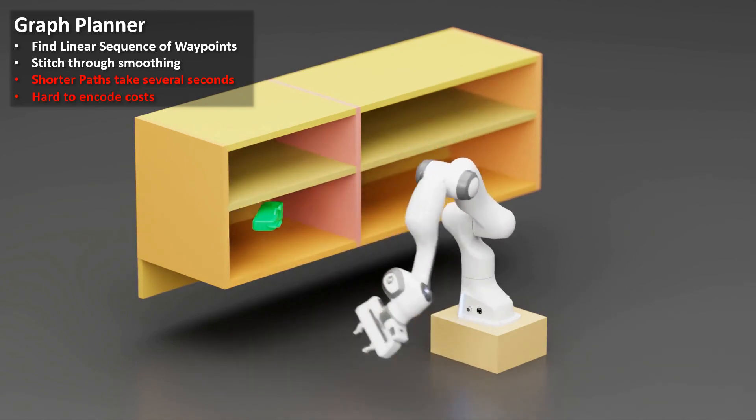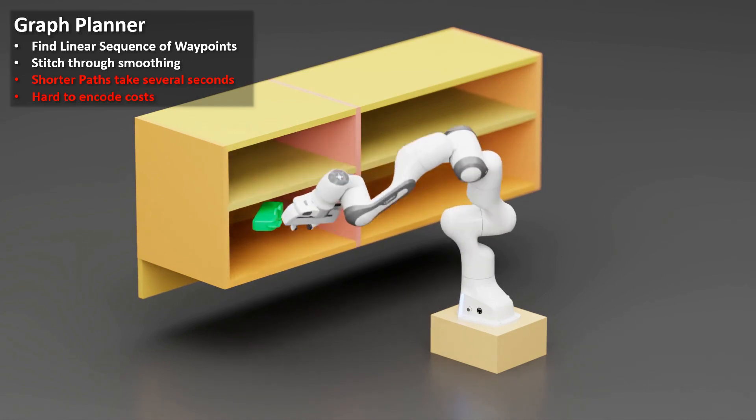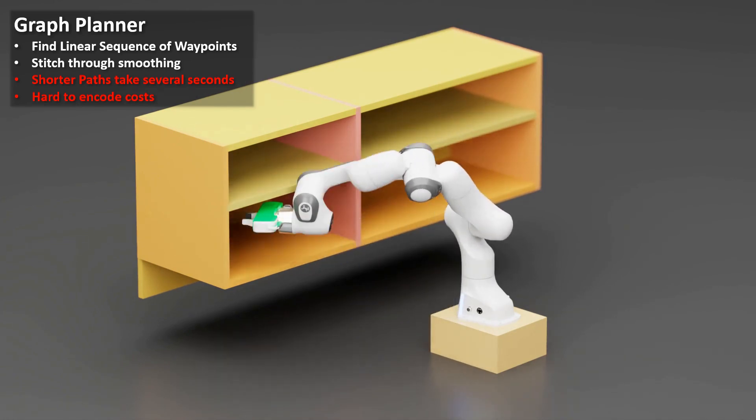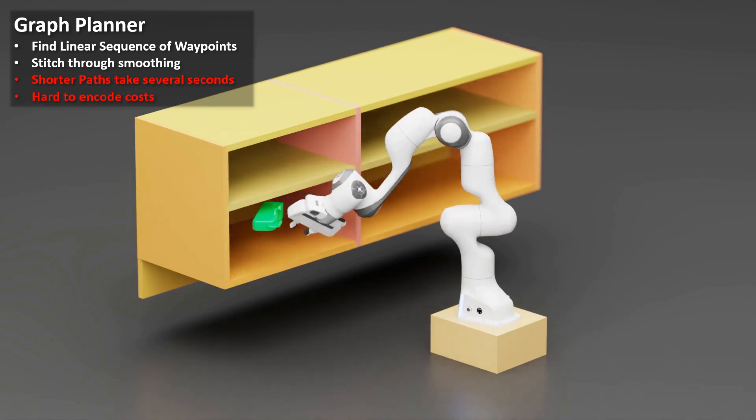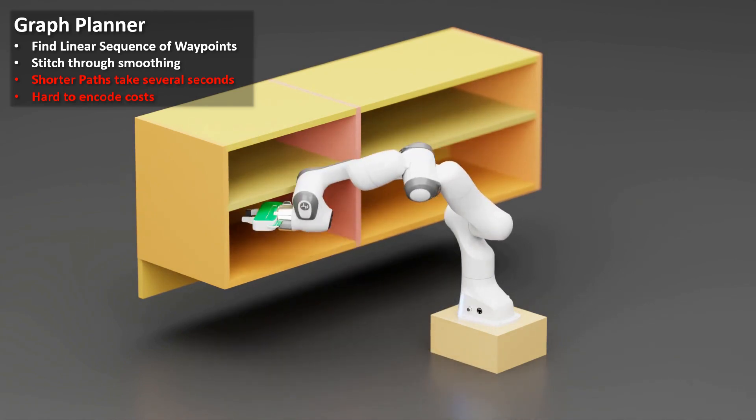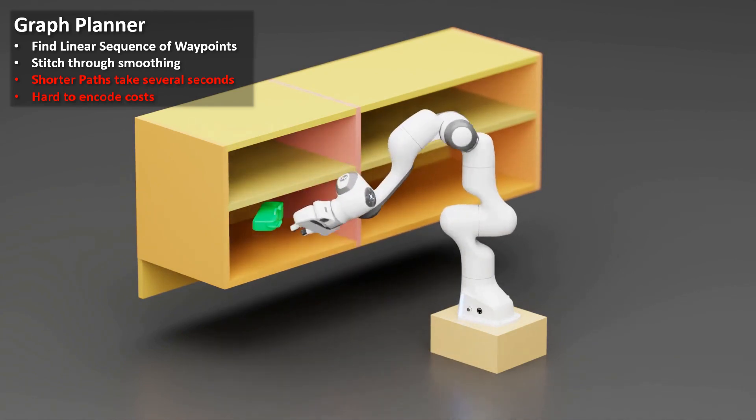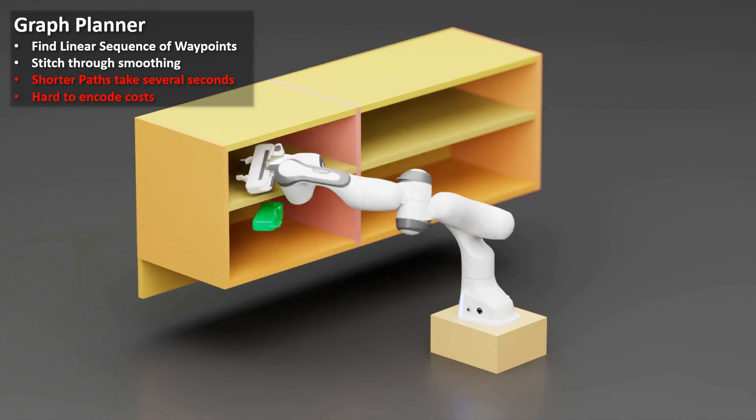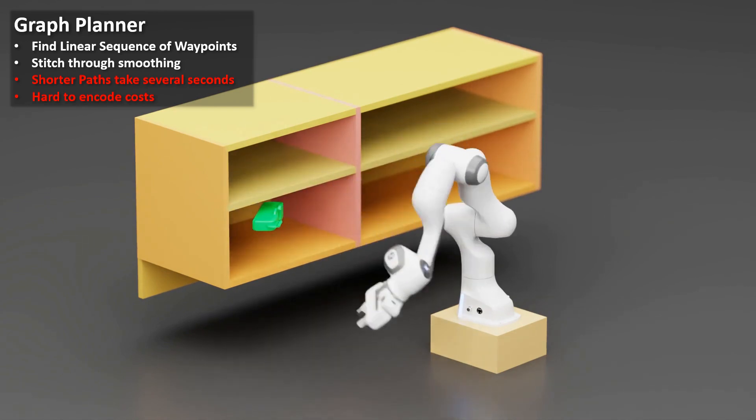Graph planning requires mapping the goal pose to a goal configuration, which is typically done with an inverse kinematics solver. Most graph search techniques assume that the robot can instantly change velocity, while manipulators have acceleration and jerk limits. Hence, a trajectory smoother is used to post-process the path obtained from a graph planner.